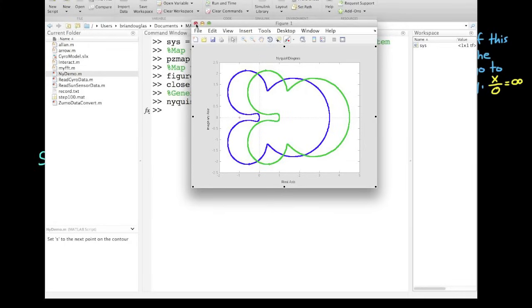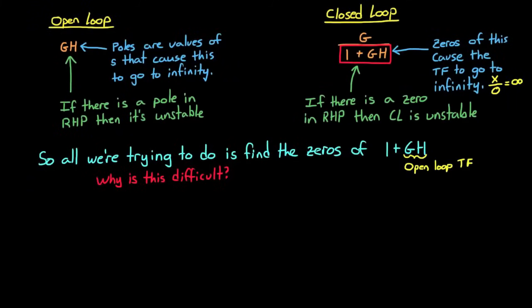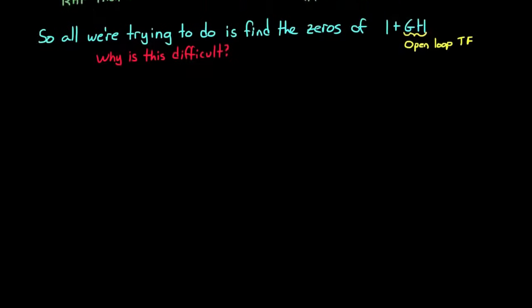Now the only thing we need to know is how to determine stability and stability margins from this graph of squiggly lines. And once we know that, then we're golden. Luckily, it's pretty straightforward once you know what to look for. But before I tell you that, I first want to show you how this plot is generated. And in doing so, I think reading it and determining stability will become obvious.